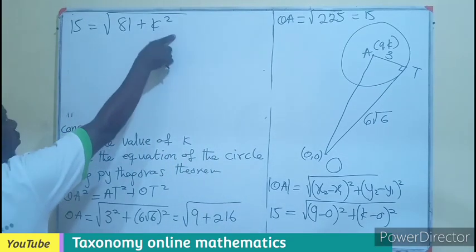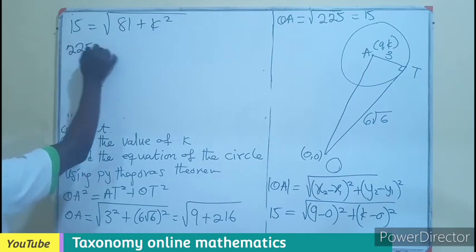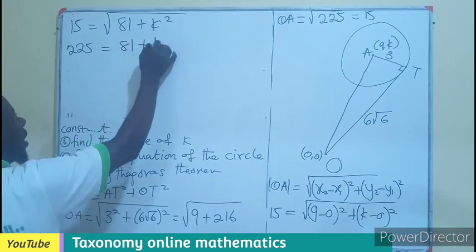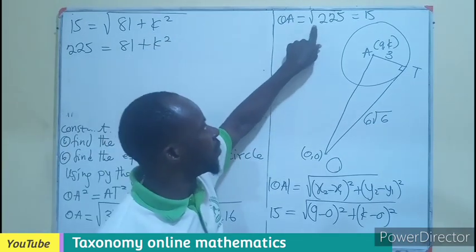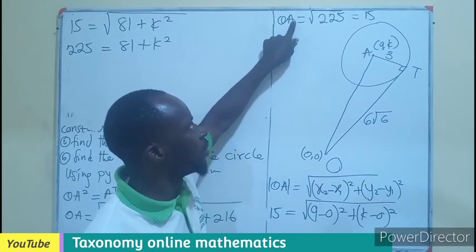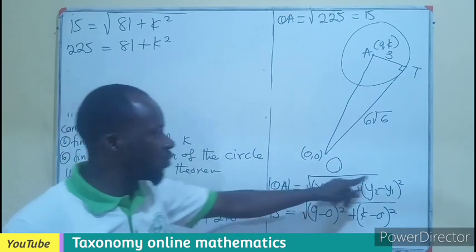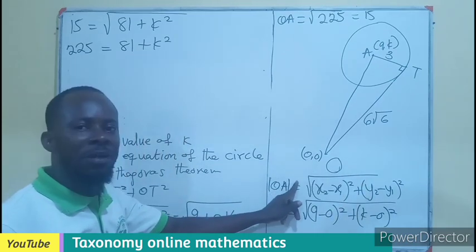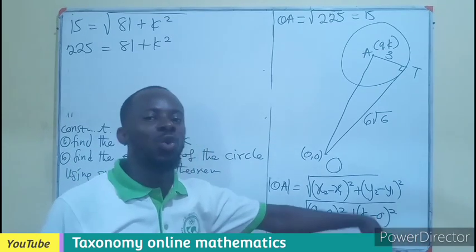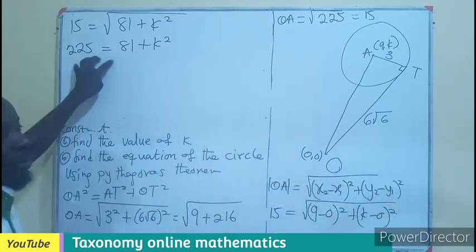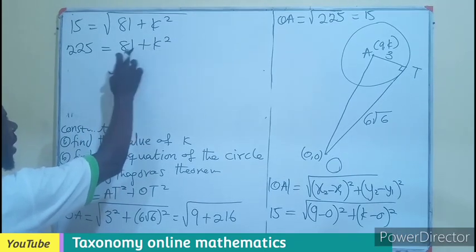But we are looking for K, so we square both sides. That gives us 225 equals to 81 plus K squared. So this is the reason why I said we could just make here the OA squared equals to 225. So in here, the square root will come here as a square. So I'll be writing directly 225 equals to the subtraction without the square root. That would have amounted to the same value.